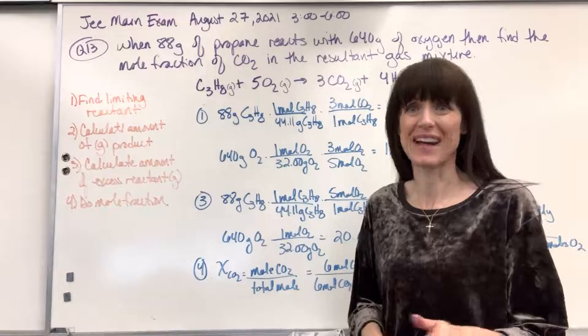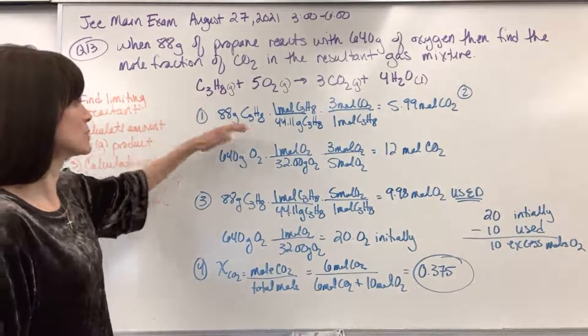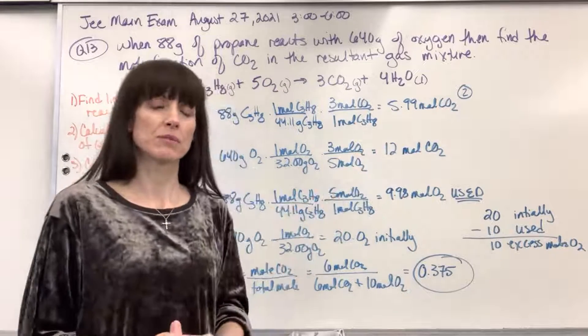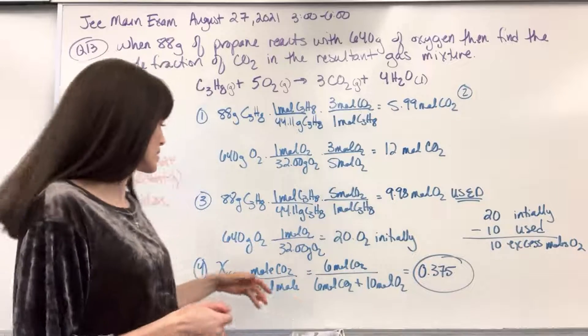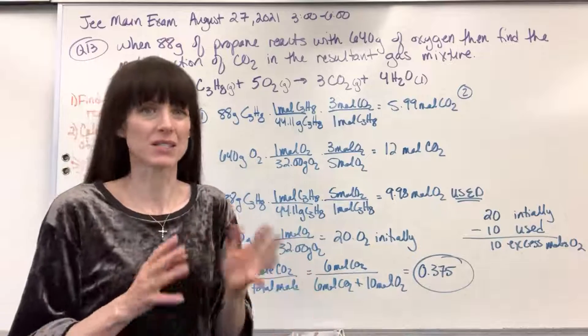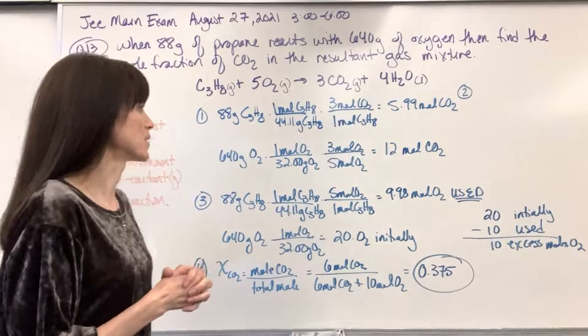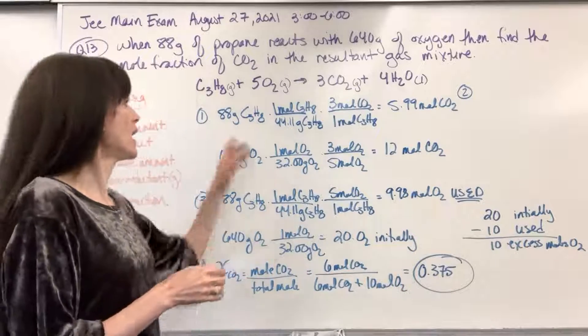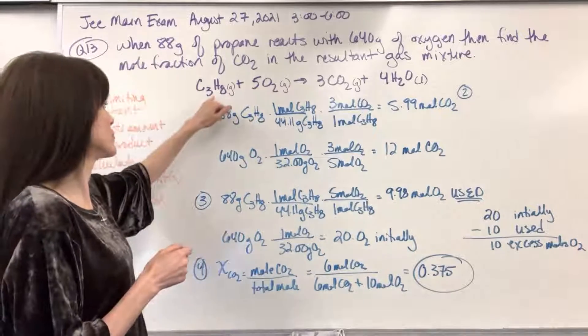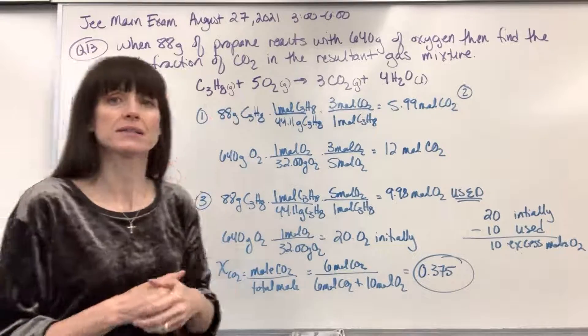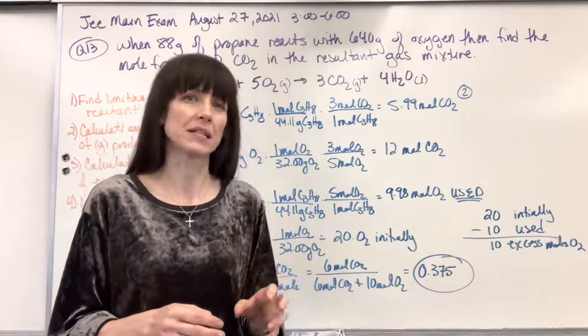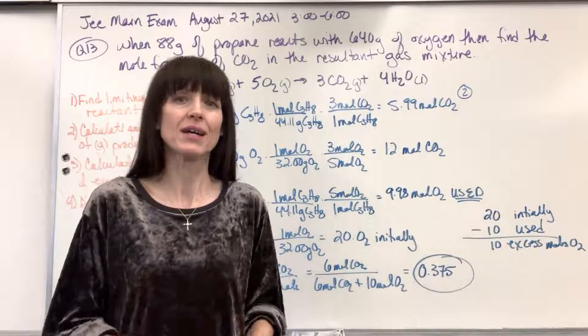So let's start with our limiting reactant. I took my 88 grams of the propane and I converted it to moles of CO2. Now the reason why I stopped at moles is that mole fraction, that equation is just moles of CO2 over total moles, so I didn't bring it all the way to mass. I just stopped at moles since that's all we need in this particular problem. Now a little side note, I took this to the CO2. I know that some people like to find limiting reactant by comparing the two reactants. You're welcome to do that and if that makes sense, please do it. I don't do that.